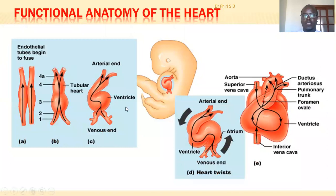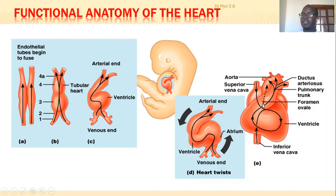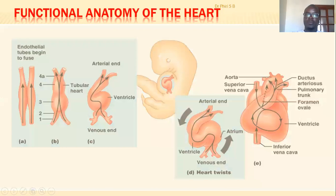This diagram shows the foramen ovale connecting the pulmonary trunk to the aorta to facilitate movement of blood during fetal development — important because the lungs are not fully developed at that stage. Sometimes it persists as patent ductus arteriosus, allowing blood movement from the pulmonary trunk into the aorta or vice versa depending on pressure. Between the atria and the ventricles there is a layer of dense connective tissue known as the fibrous skeleton of the heart.